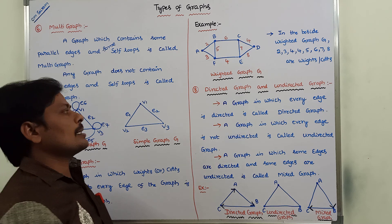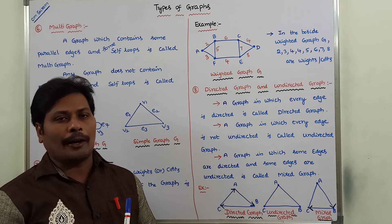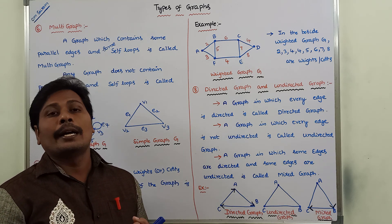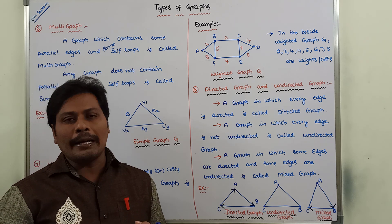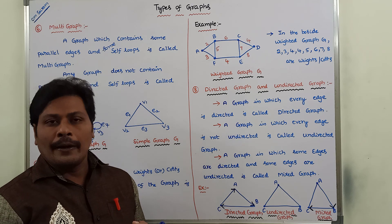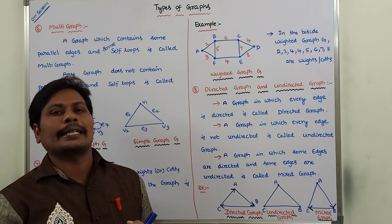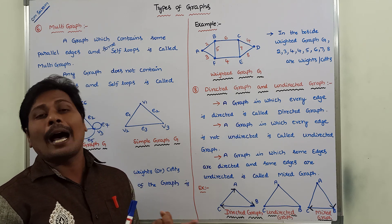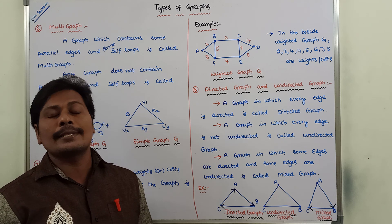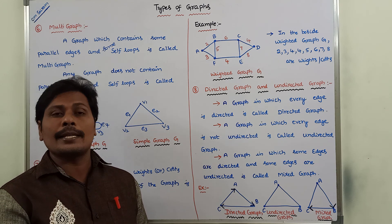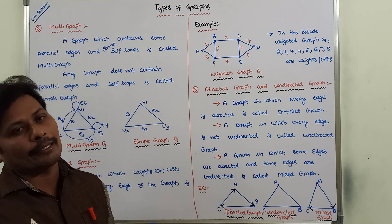Next: directed graph, undirected graph, and mixed graph. A graph in which every edge is directed is called as directed graph. A graph in which every edge is not directed is called as undirected graph. A graph in which some edges are directed and some edges are undirected is called as mixed graph.